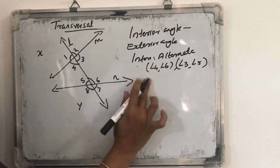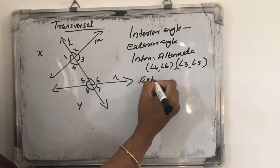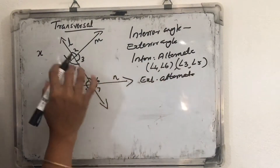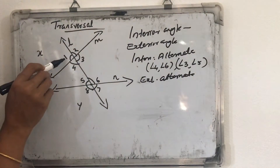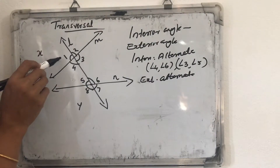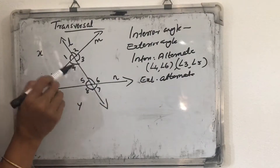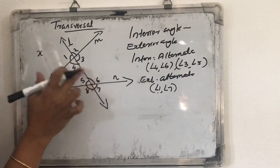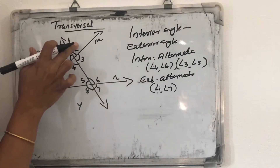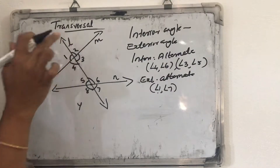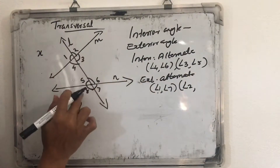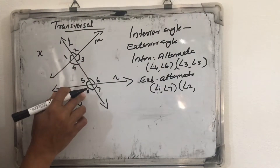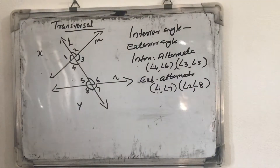Just like that, we can name exterior alternate angles. If we take exterior angle 1, its alternate exterior angle is the exterior angle on the other side of the transversal — that is angle 7. Angle 1 and angle 7 are one pair of exterior alternate angles. Just like that, the pair of exterior alternate angle of angle 2 is angle 8, on the opposite side of the transversal. Angle 2 and angle 8 are exterior alternate angles.